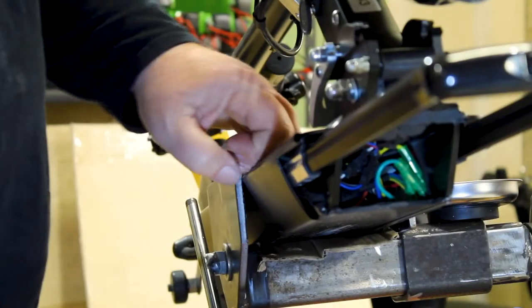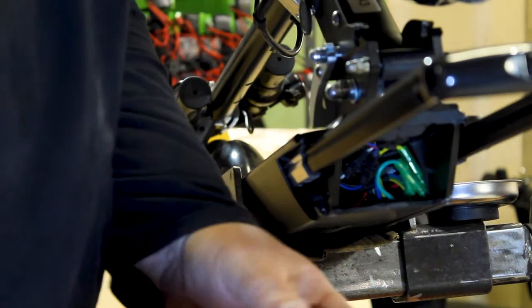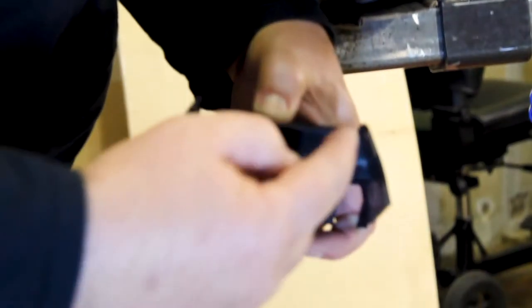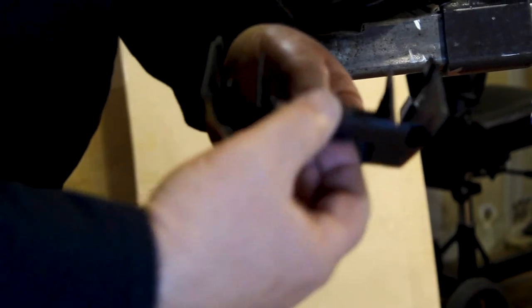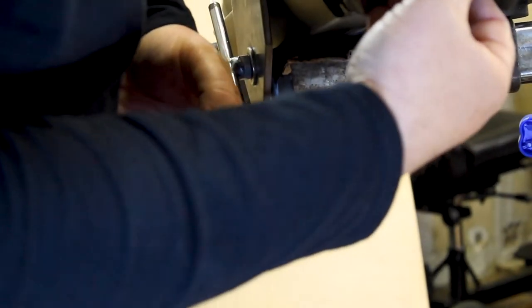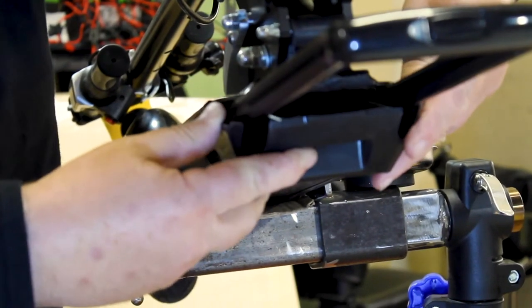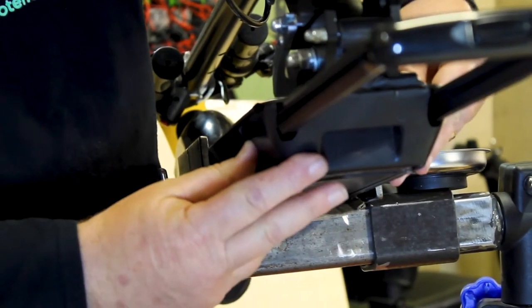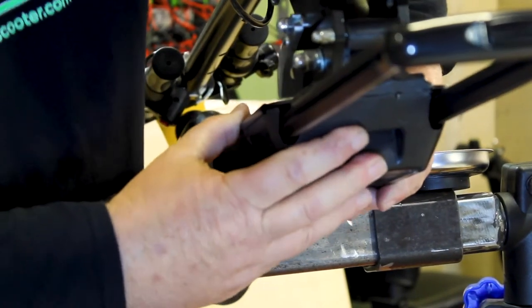We're going to get ready to put the nose cone on to the scooter. One thing we have to watch is there's ears on the side of the cone. They have to fit inside of the outside of the frame. Press in on both sides back here so that the tabs go in place. Push it back.